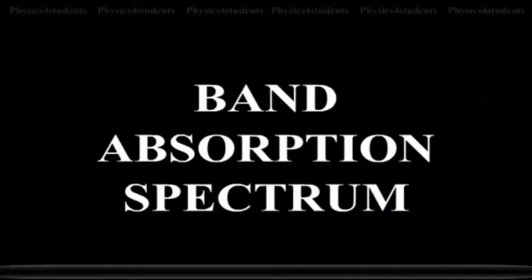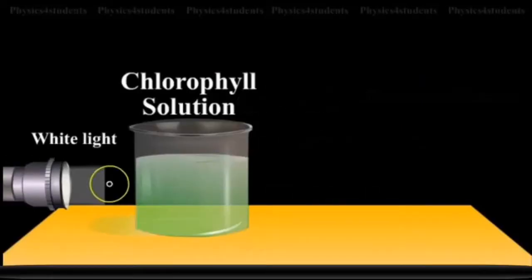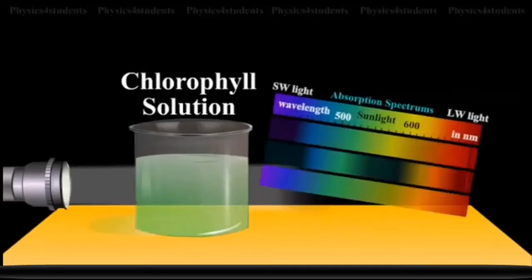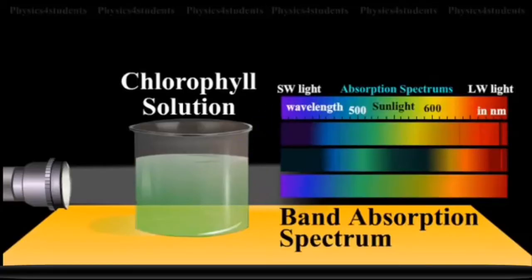Band Absorption Spectrum. If white light is allowed to pass through iodine vapor or dilute solution of blood or chlorophyll or through certain solutions of organic and inorganic compounds, dark bands on continuous bright background are obtained.